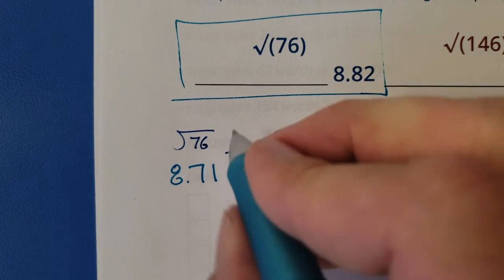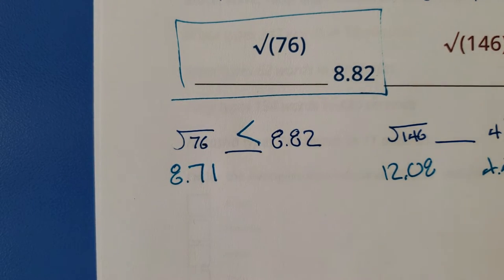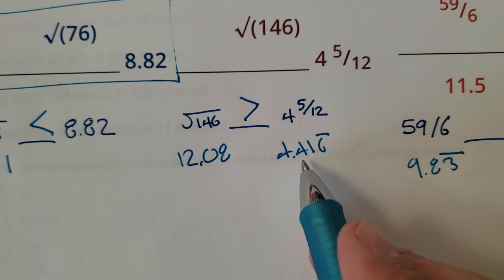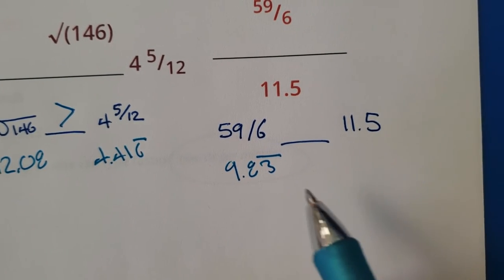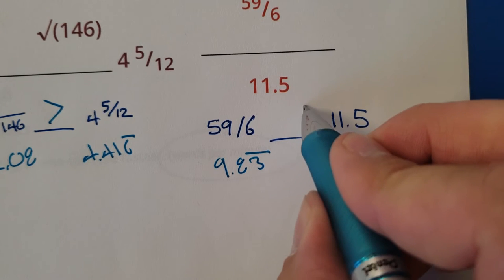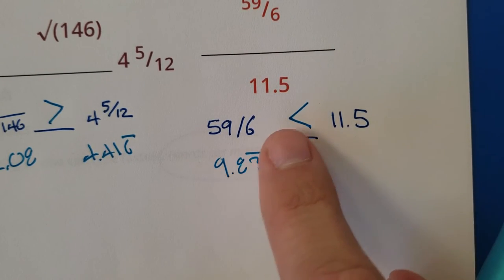So I'm going to do a less than symbol. 8.71 is less than 8.82. 12 is obviously going to be greater than 4.4 and change. And then 9 point something versus 11 point something. The 11 point something is going to be more than. So I'd put a less than symbol. This is less than that.